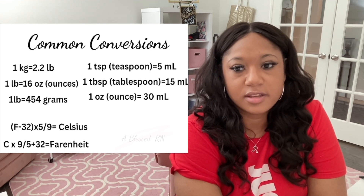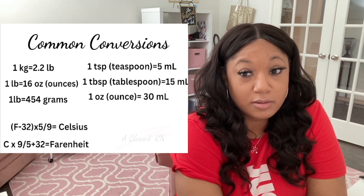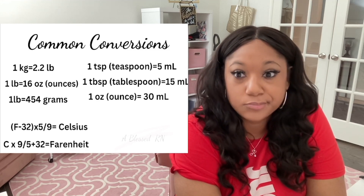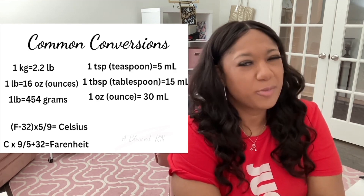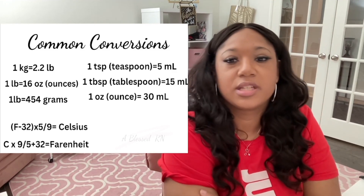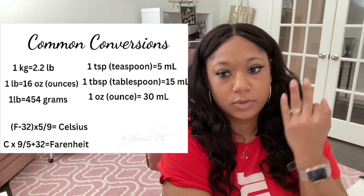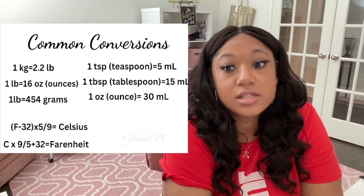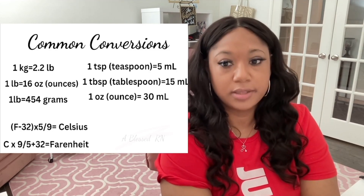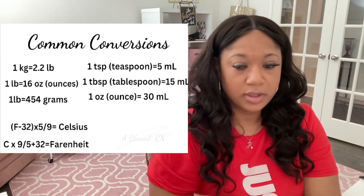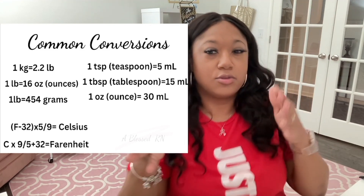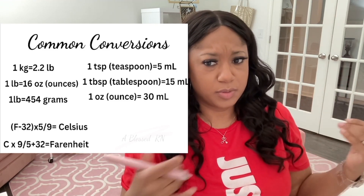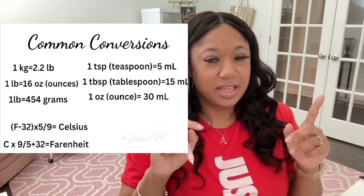Then you have your Fahrenheit and Celsius conversions — you really have to commit those to memory. I'm trying to figure out a clever mnemonic but I haven't got one yet. The teaspoon is 5 mL, the tablespoon is three teaspoons which is 15 milliliters, and an ounce is 30 milliliters. That's really all there is to it.